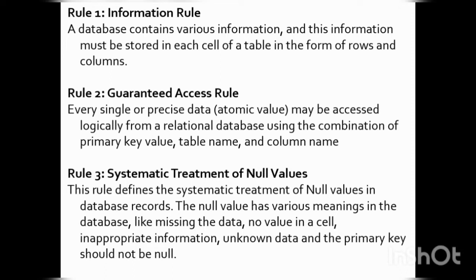The next rule is the Guaranteed Access Rule. Every single or precise piece of data may be accessed logically from a relational database by using a combination of primary key value, table name, or column name. The primary key is the attribute used to uniquely identify each record in the table. By using these three — primary key, table name, and column name — we can access the data.